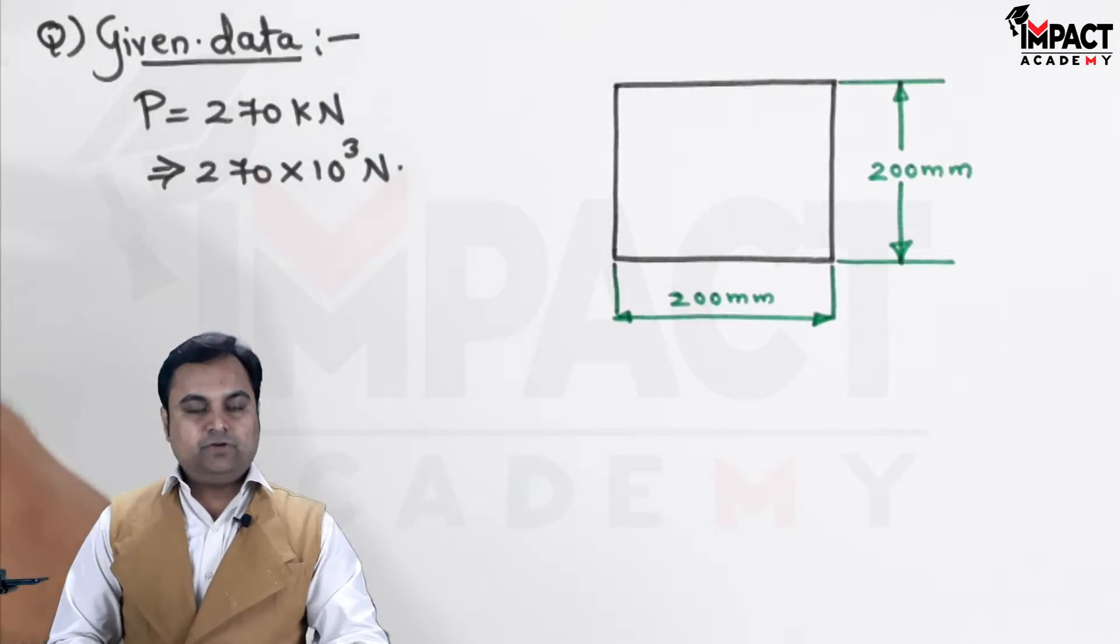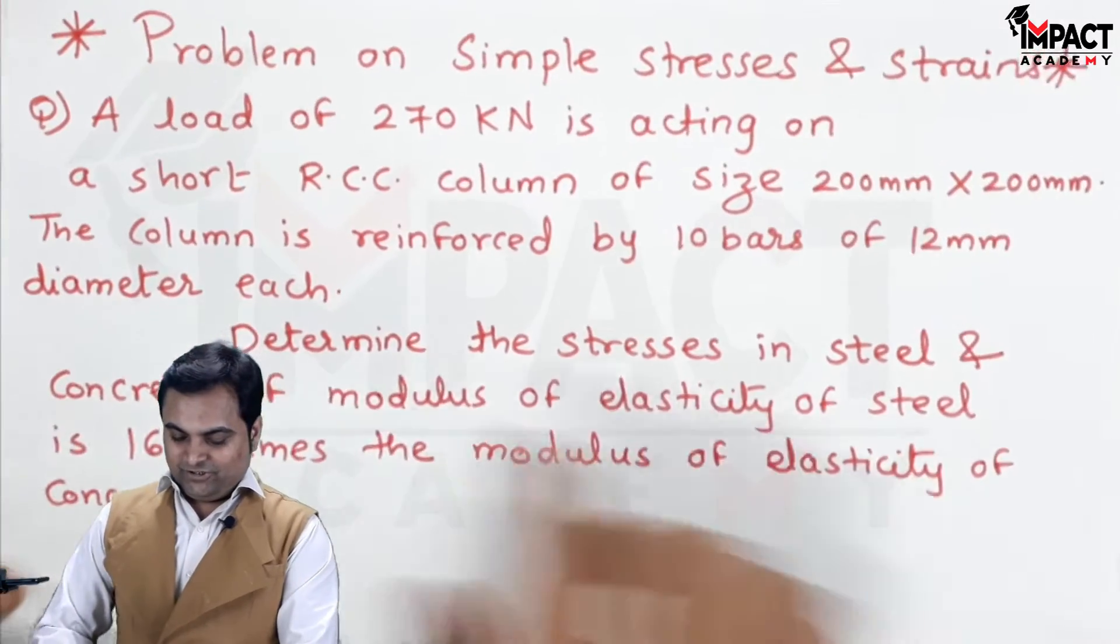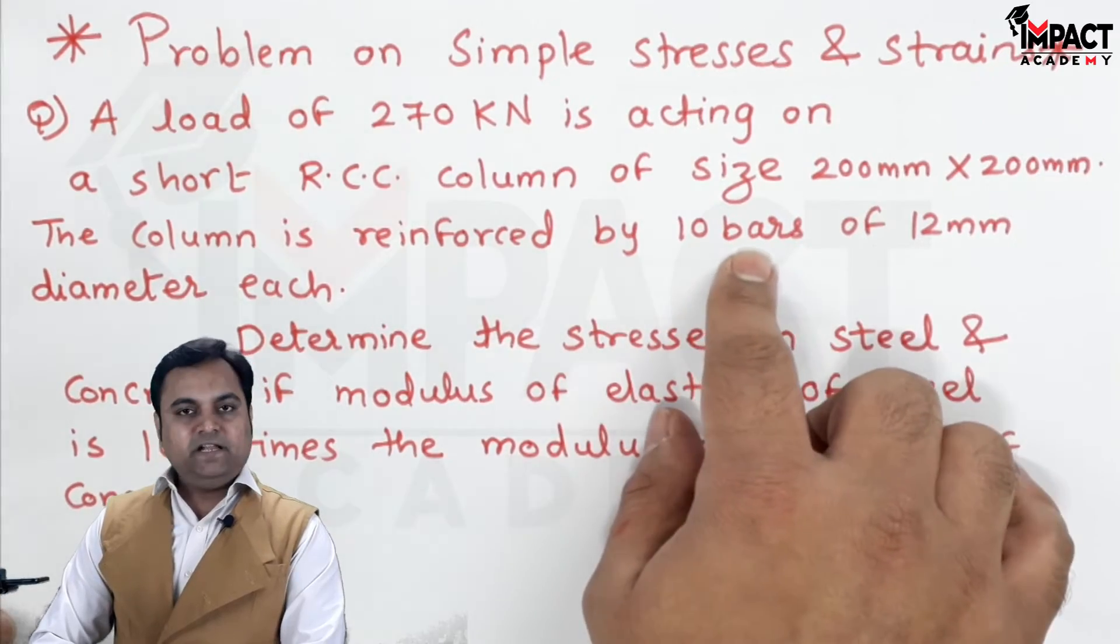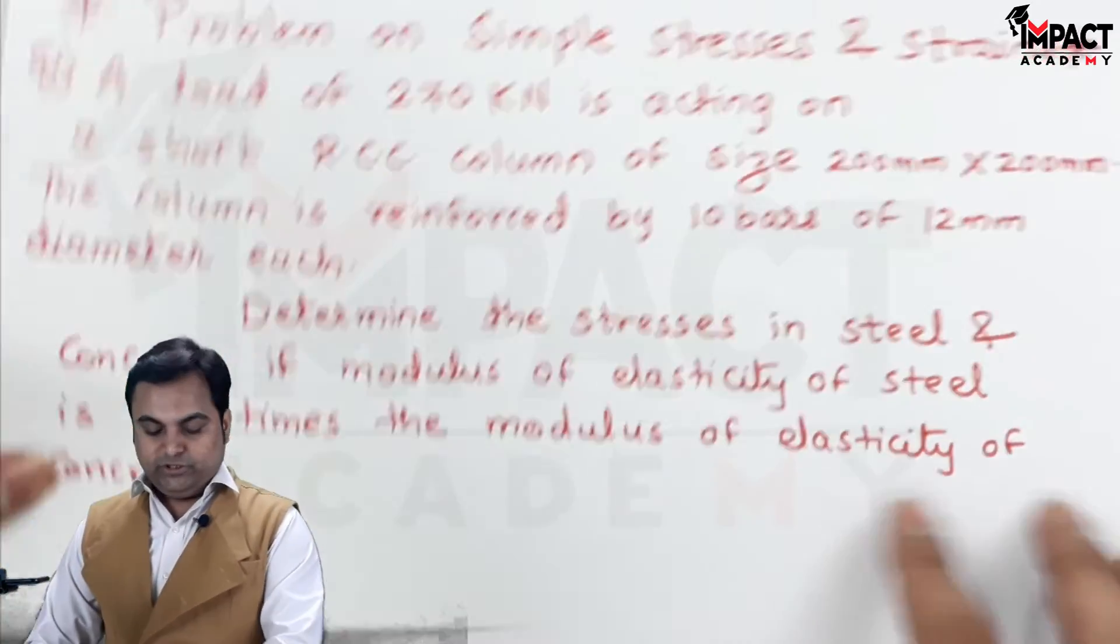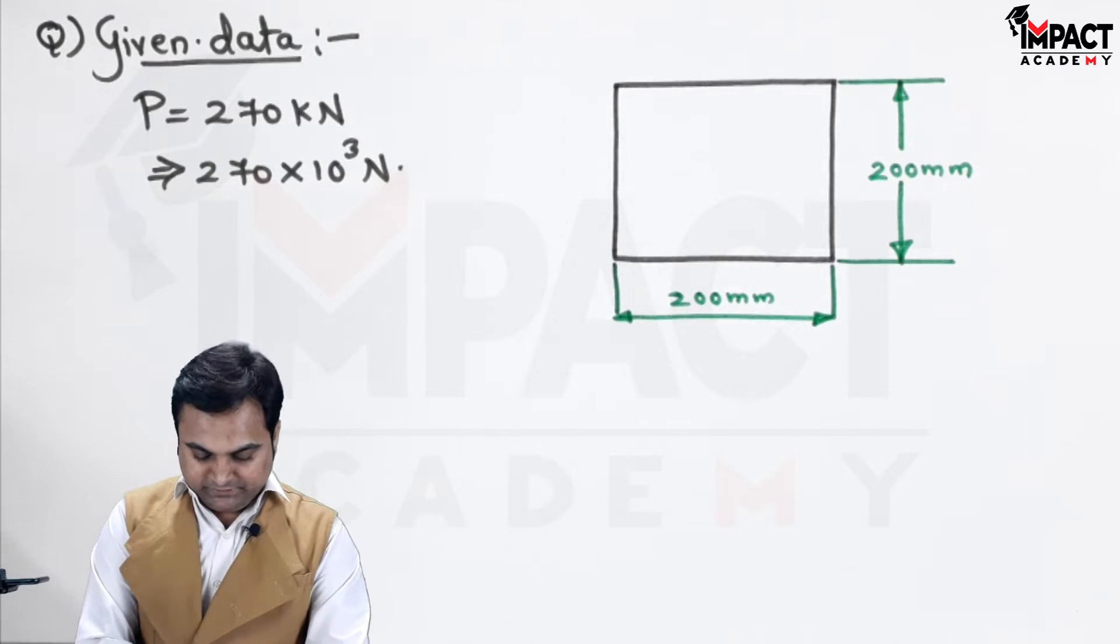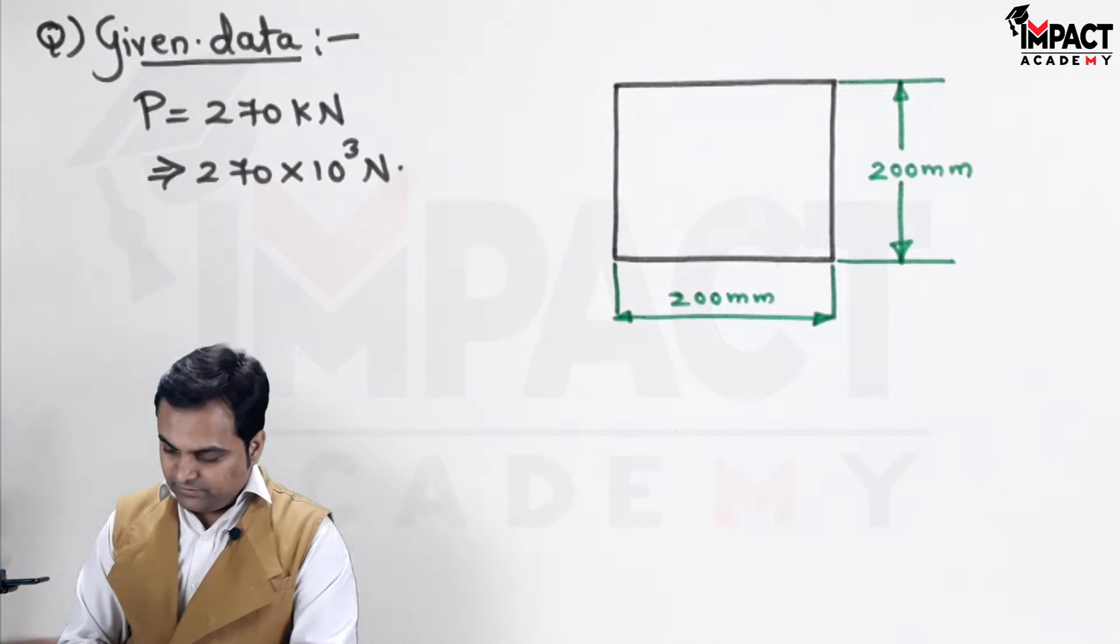So, this is the cross section of the column. Next, the column is reinforced by 10 bars of 12 mm diameter each. So, here inside this there are 10 bars. I will draw the diagram.